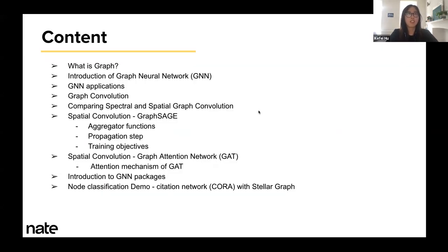Here is the content of our workshop today. As you can see, there are a few chapters, but I promise they will be short and sweet. We will start by introducing the definition of a graph and the basic theories of graph neural network, as well as some applications. Then we will dive in deeper to compare different variations of graph convolution. At the end of the workshop, I will show a small demo to perform node classification using Stellar Graph.